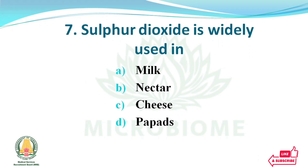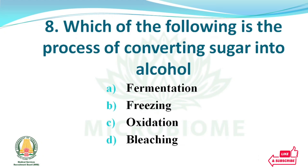Sulfur dioxide is widely used in — options: milk, nectar, cheese, puppet. The right answer: option B, nectar. Which of the following is the process of converting sugar into alcohol? Options: fermentation, freezing, oxidation, bleaching. The right answer: option A, fermentation.